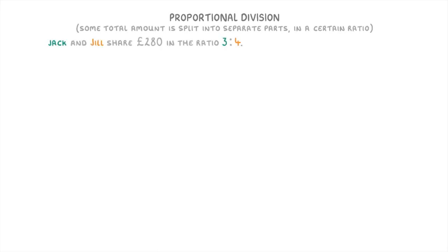For example, in this question here we're told that Jack and Jill share £280 in the ratio 3 to 4, and it asks us how much will each of them get.